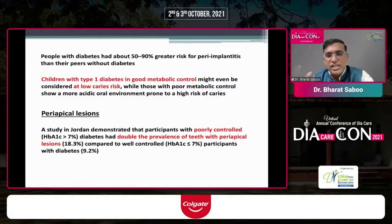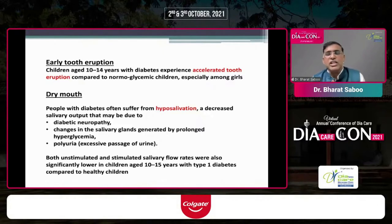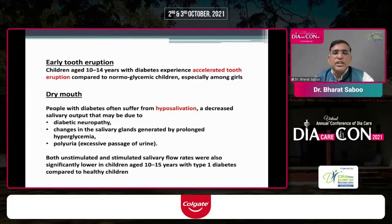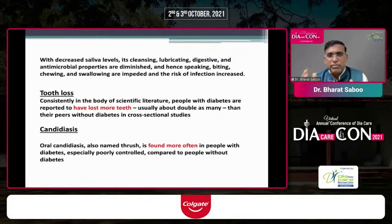Regarding periapical lesions, one study shows double the prevalence of teeth with periapical lesions in uncontrolled diabetics compared to controlled diabetics. There is also early tooth eruption in children aged 10 to 14 years with diabetes, who show accelerated tooth eruption compared to normoglycemic children. Additionally, there is a higher incidence of dry mouth because people with diabetes suffer from hyposalivation, which can be due to diabetic neuropathy, changes in salivary glands from prolonged hyperglycemia, or polyuria causing volume depletion. Decreased salivary flow impairs cleansing, lubricating, digestive, and antimicrobial functions.